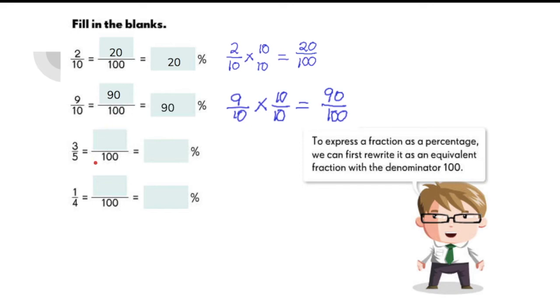For 3 fifths, do you know how to express this as a fraction with a denominator of 100? Yes, you just need to multiply the numerator and the denominator by 20, and you will get 60 over 100, which is equal to 60%.